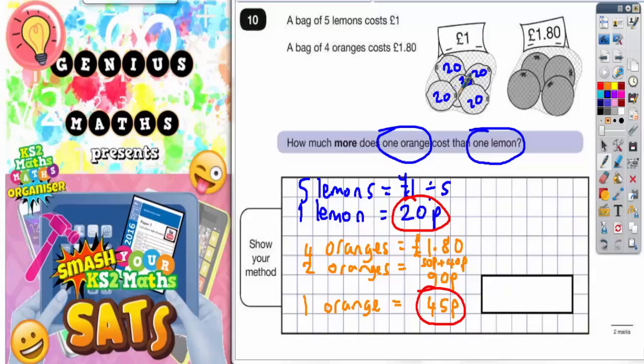So 20, 40, 60, 80, £1. So yeah, that's definitely 20p each. And if you count up in 45s for the oranges, well these two 45s will make 90, and these two 45s would also make 90.